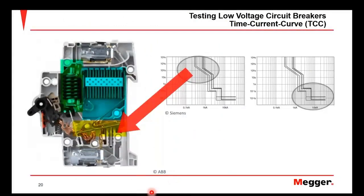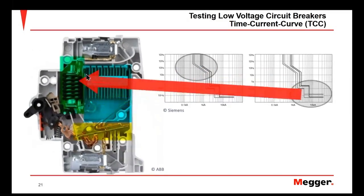This is the physical representation of the mechanical hardware. The overload element — long time and short time — relates to the thermal protective function in the breaker, which works off a heating effect that occurs when a certain amount of current flows. Additionally, there is the physical magnetic mechanism that relates to the instantaneous function of the time current curve.